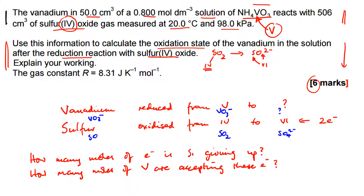Let's do an example. If sulfur was giving up one mole of electrons and one mole of vanadium was accepting those electrons, the oxidation state changes by one — we'd go from +5 to +4. Different example: if sulfur was giving up two moles of electrons — which in fact it is — and one mole of vanadium was accepting those, the oxidation state would change by two, so vanadium would go from +5 to +3. That's the conceptual point you need to understand before starting the calculation.